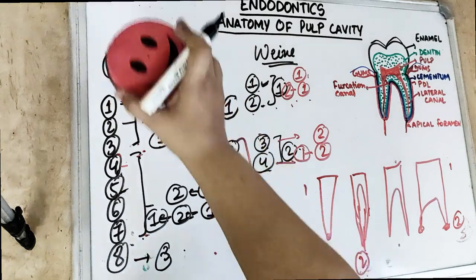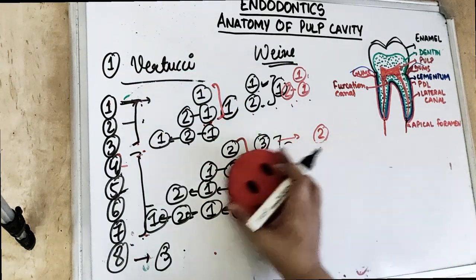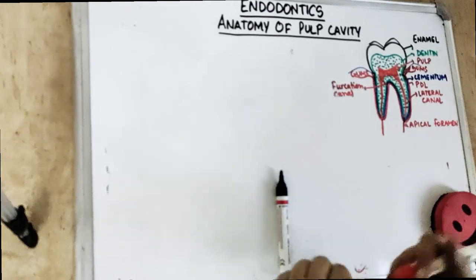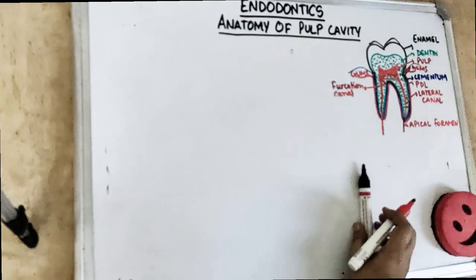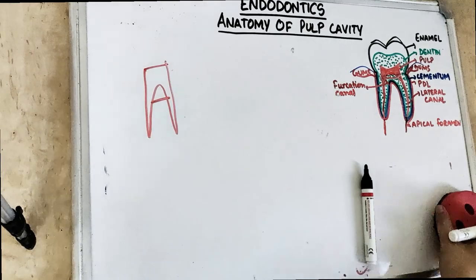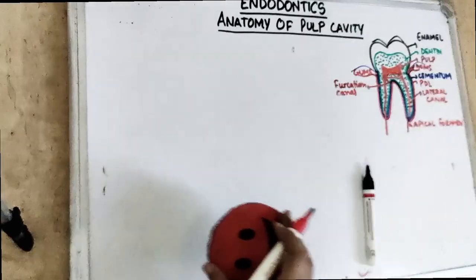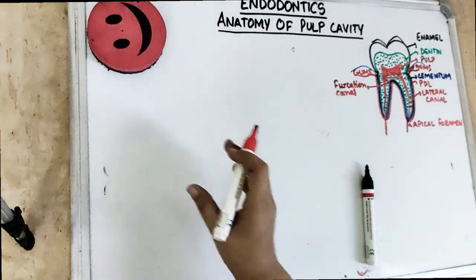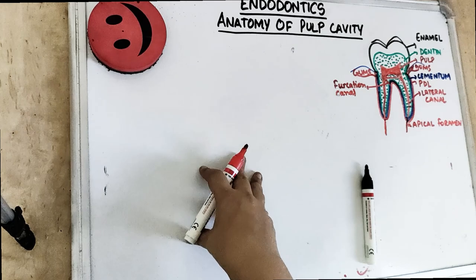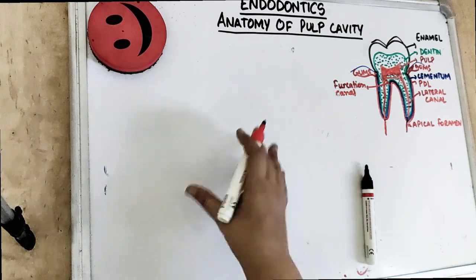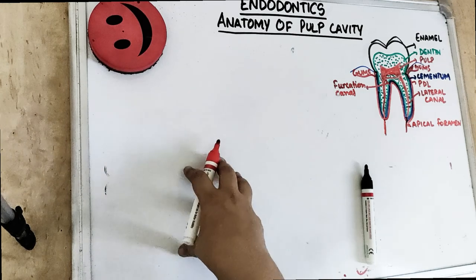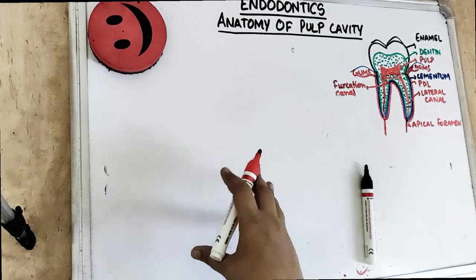Now talking about the isthmus. The isthmus is the communication or connection between two root canals. It is a narrow passage — an anatomical connection between two root canals. It contains pulpal-derived tissue but acts as a storehouse for bacteria because it communicates between two canals. Identification and treatment of the isthmus is vital for the success of any surgical endodontic procedure.